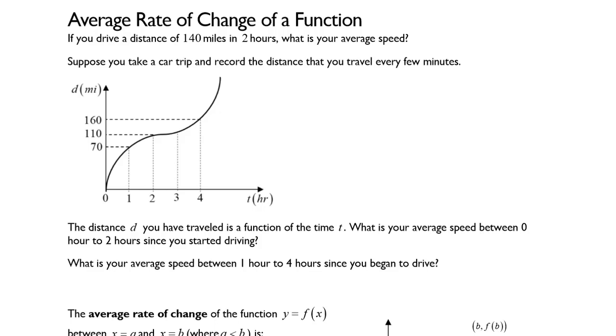The reality is that you're probably not going to keep a consistent rate as you move or as you drive. So suppose you take a car trip and record the distance that you travel every few minutes. This graph below shows a possible outcome for that data. The distance d you have traveled is a function of time t.